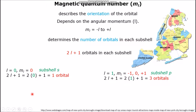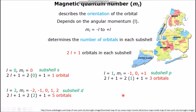For sub-shell P, the L value is 1, and the ML values range from negative 1 all the way to positive 1. There are only 3 orbitals contained in sub-shell P, meaning electrons can be present in any of these 3 orbitals. For sub-shell D, its L value is 2, and the ML values range from negative 2 all the way to positive 2. The number of orbitals in sub-shell D is 5 orbitals, meaning electrons can fill these 5 orbitals.